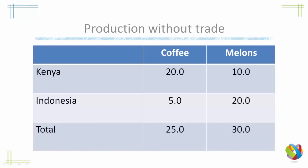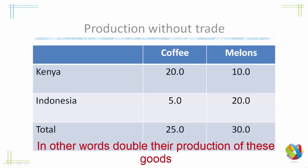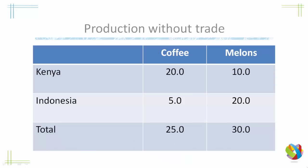So if we add up the total production of both coffee and melons, we see we have 25 units of coffee and 30 melons. Now what if Kenya were to stop producing melons and concentrate on coffee, which it has an advantage in, and Indonesia likewise would stop producing coffee and start producing melons, in which it was better at? Let's have a look at what happens.